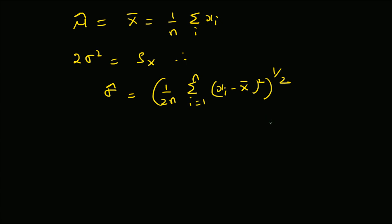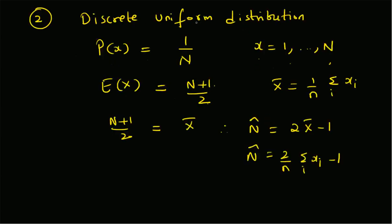For the discrete uniform distribution with PMF 1/N, where N is the number of possible values for x, the mean is (N+1)/2. Equating this to the sample mean, the estimate of N is N_hat = 2 * x_bar - 1, that is two times the sample mean minus one. Thanks for watching.